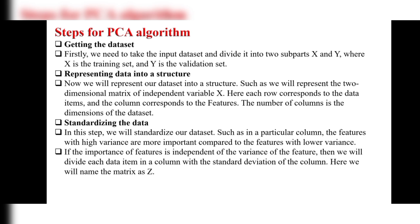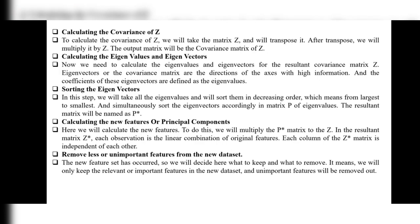Step 3: Standardizing the data. Features with high variance are more important compared to features with low variance, so we consider only high-variance features. If the importance of a feature is independent of its variance, we divide each data item in a column by the standard deviation of that column. We name this resulting matrix Z.